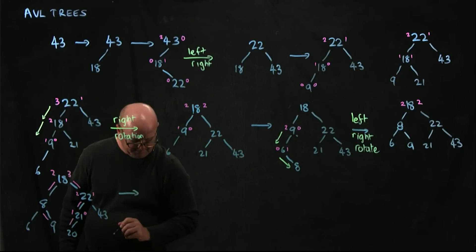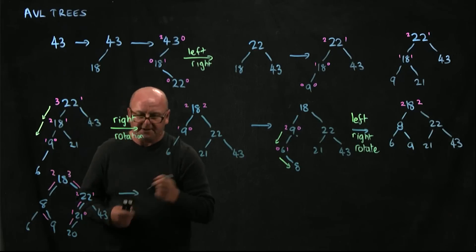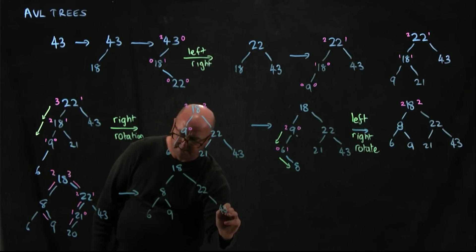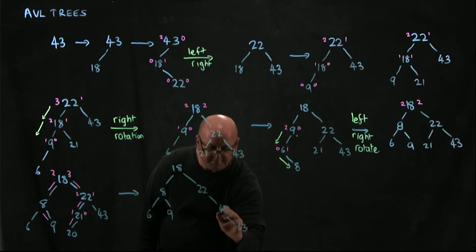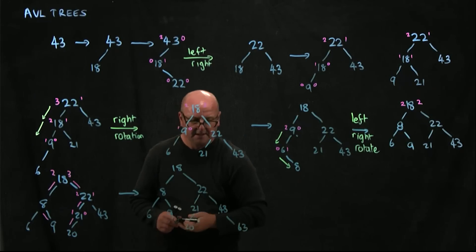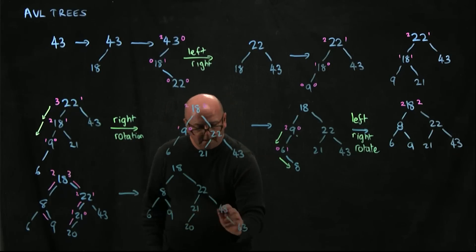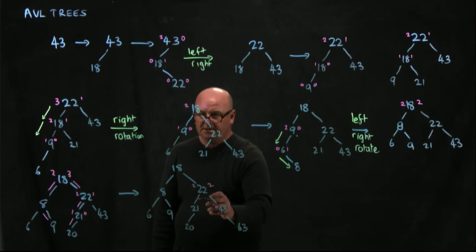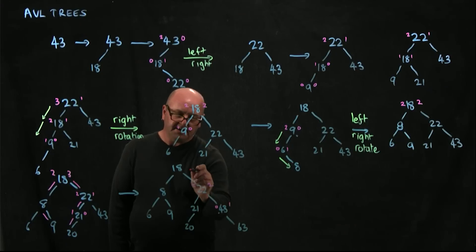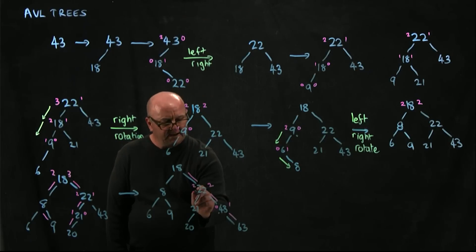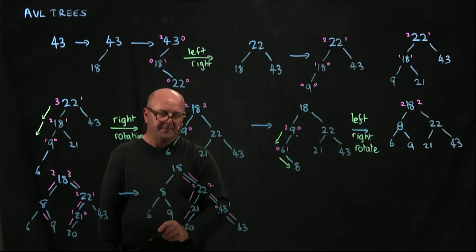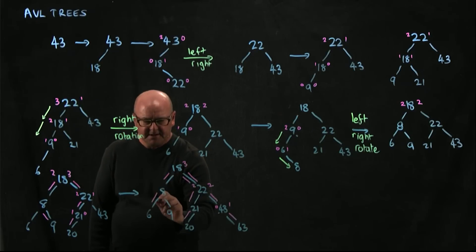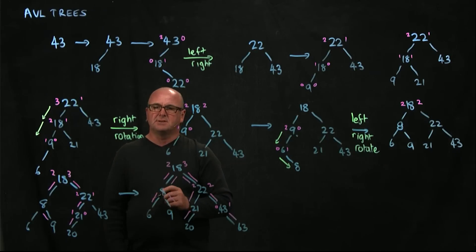Next we add 63. 63 is bigger than 18, bigger than 22, and bigger than 43. Our 43 has 1 and 0 — that's okay. Our 22 has 2 left and 2 right. Our 18 has height 3 on the right via two different paths and height 2 on the left, also reachable in two ways. Since the difference is only 1, this tree remains balanced.